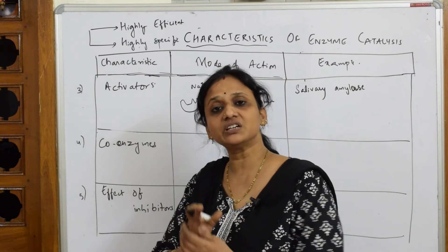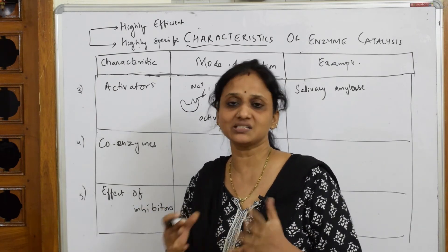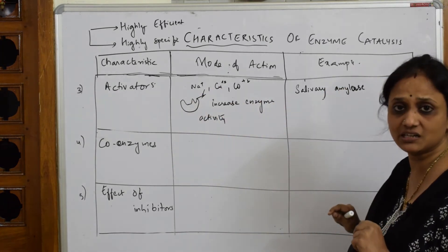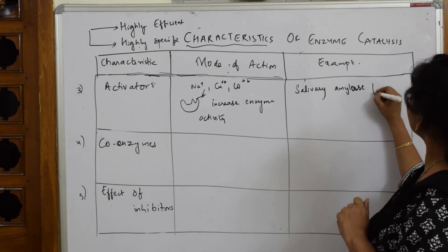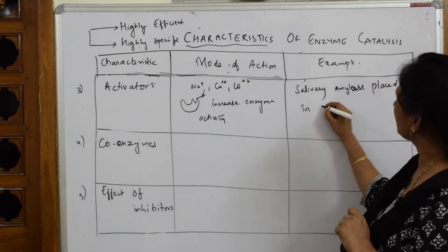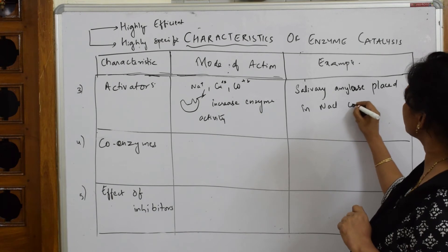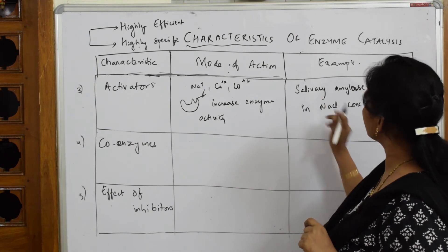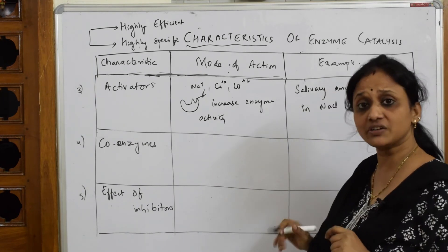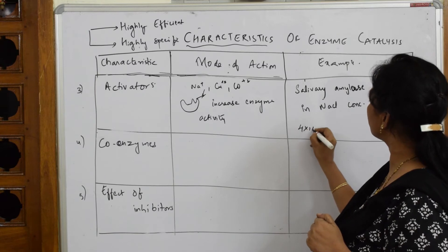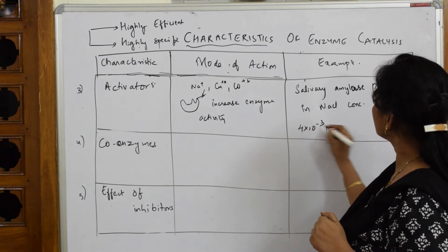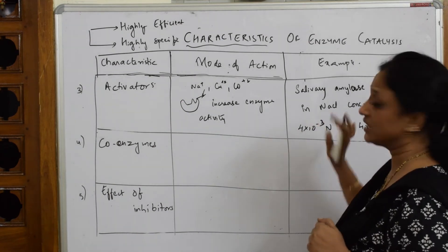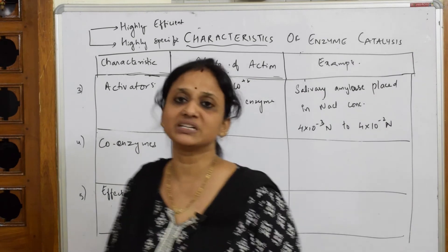When salivary amylase is placed in a sodium chloride concentration, the Na⁺ ions fix into the active site and the activity of salivary amylase increases from 4×10⁻³ normal to 4×10⁻² normal. This is how the presence of NaCl, and metal ions in general, affects and increases the efficiency of enzymes.